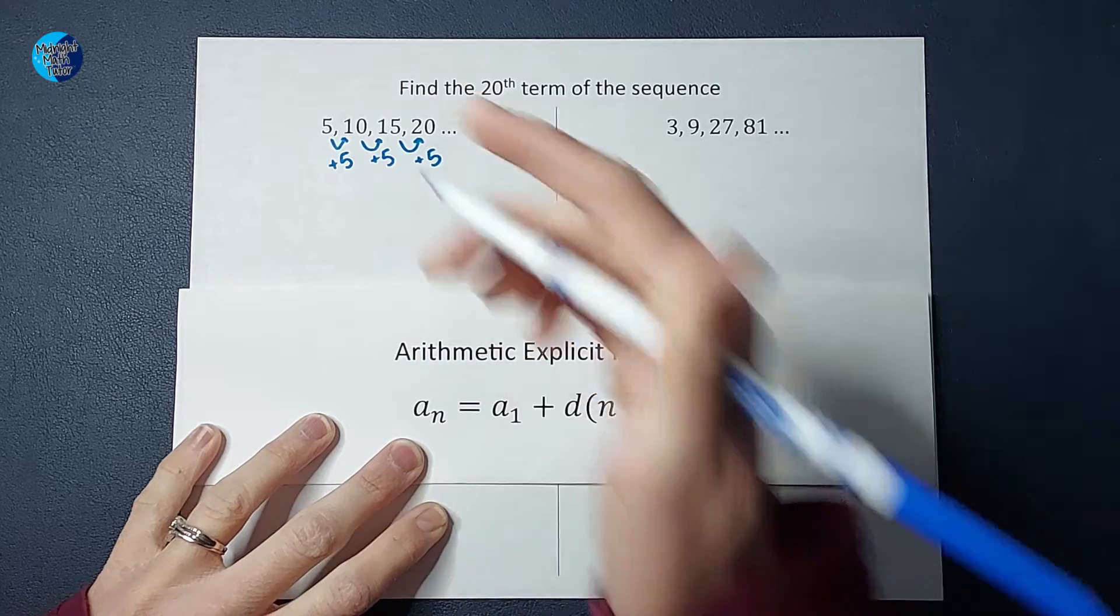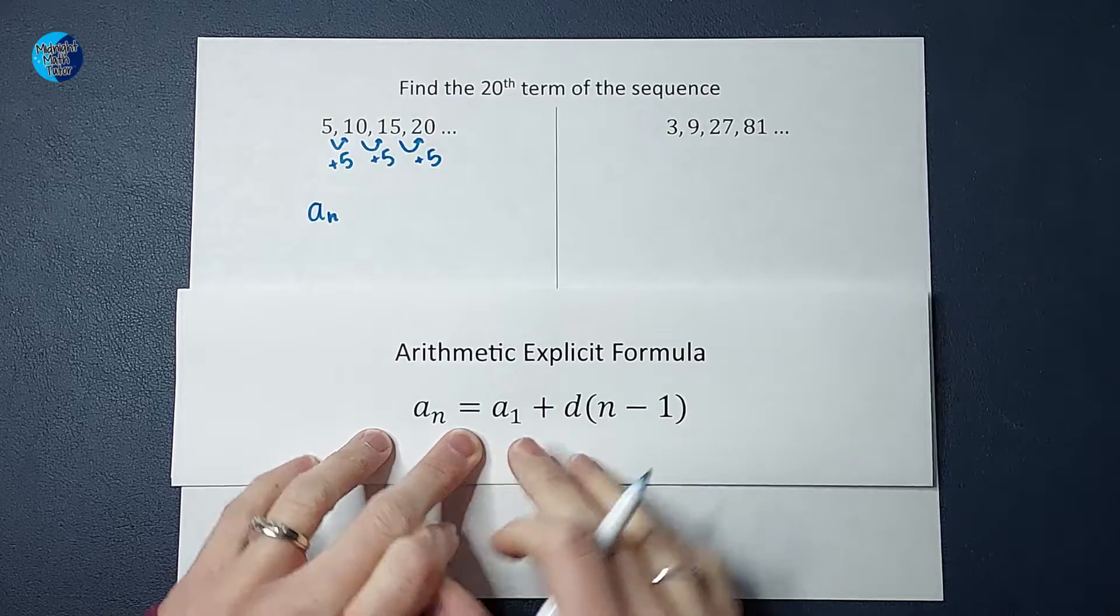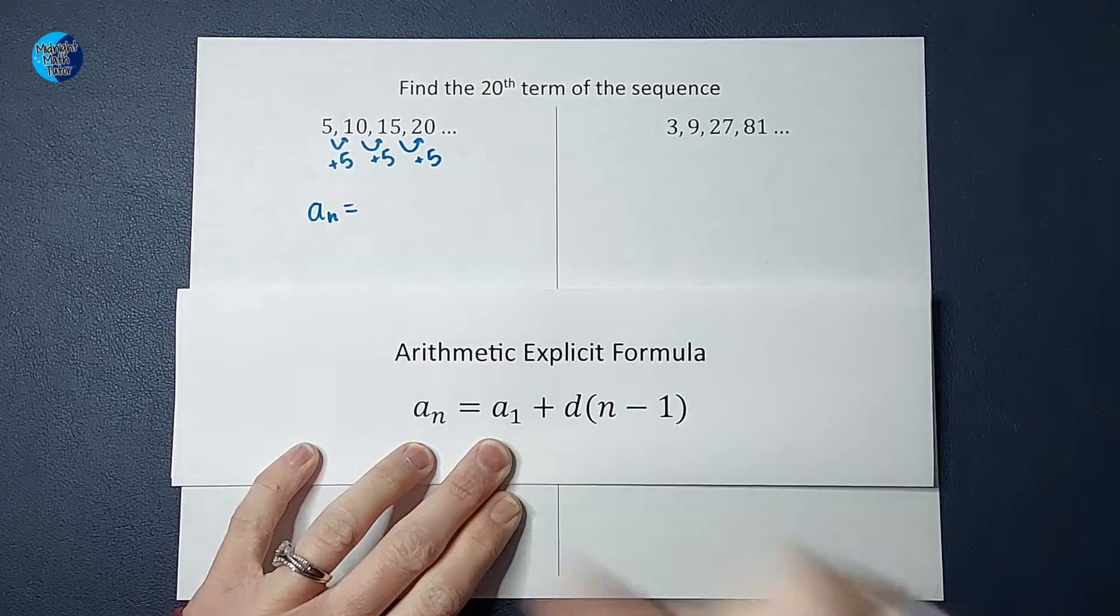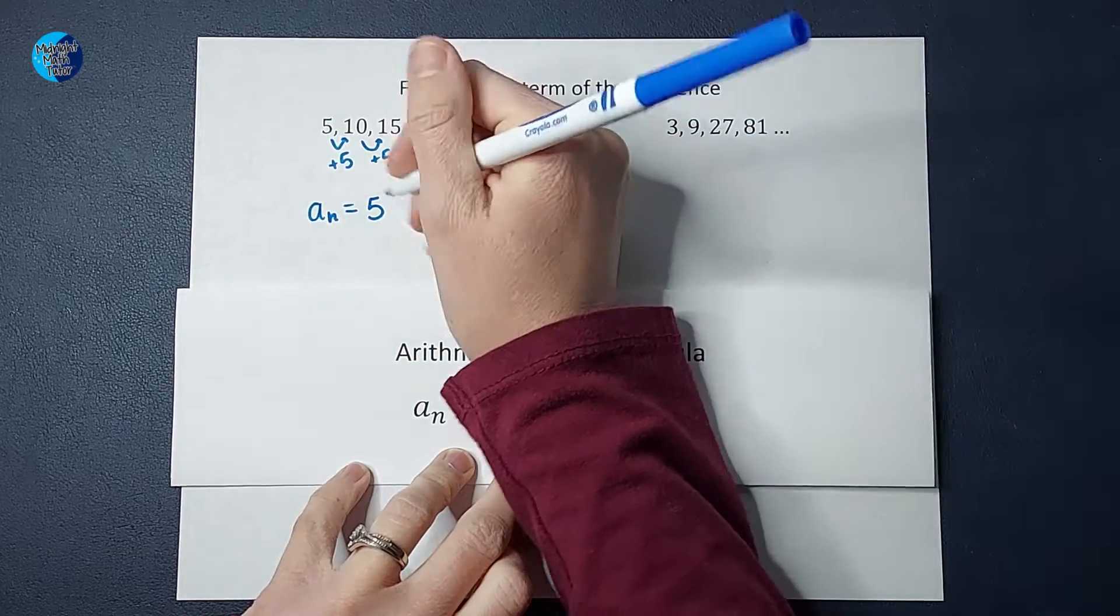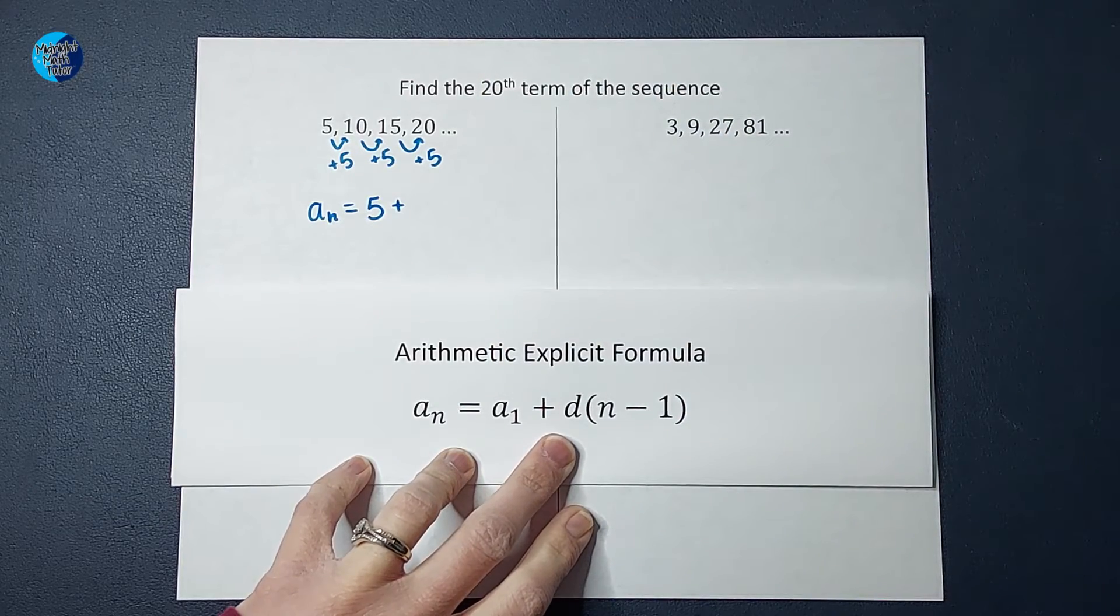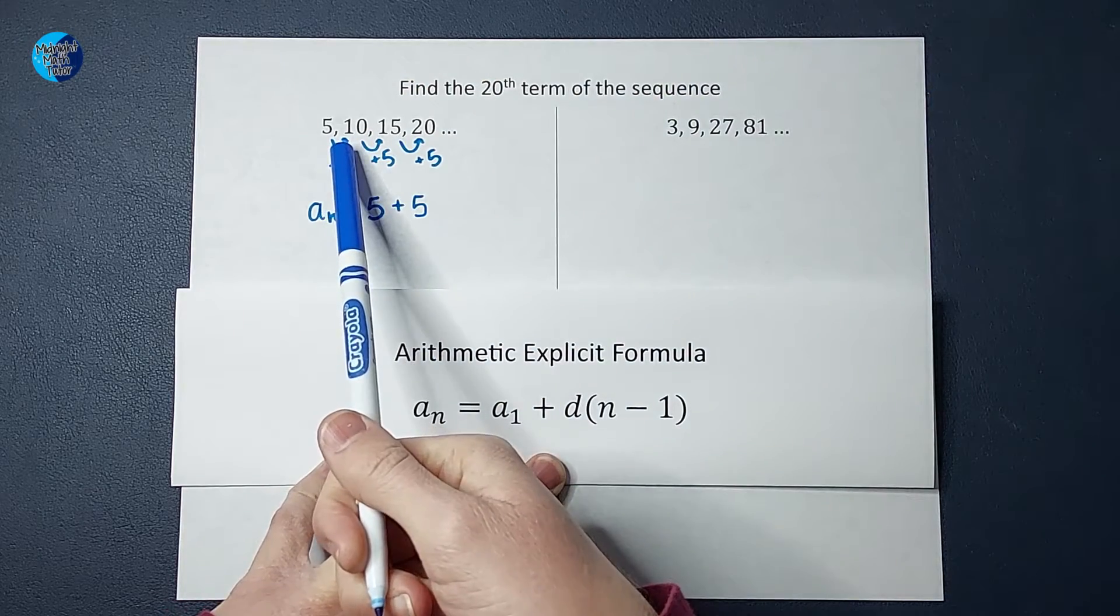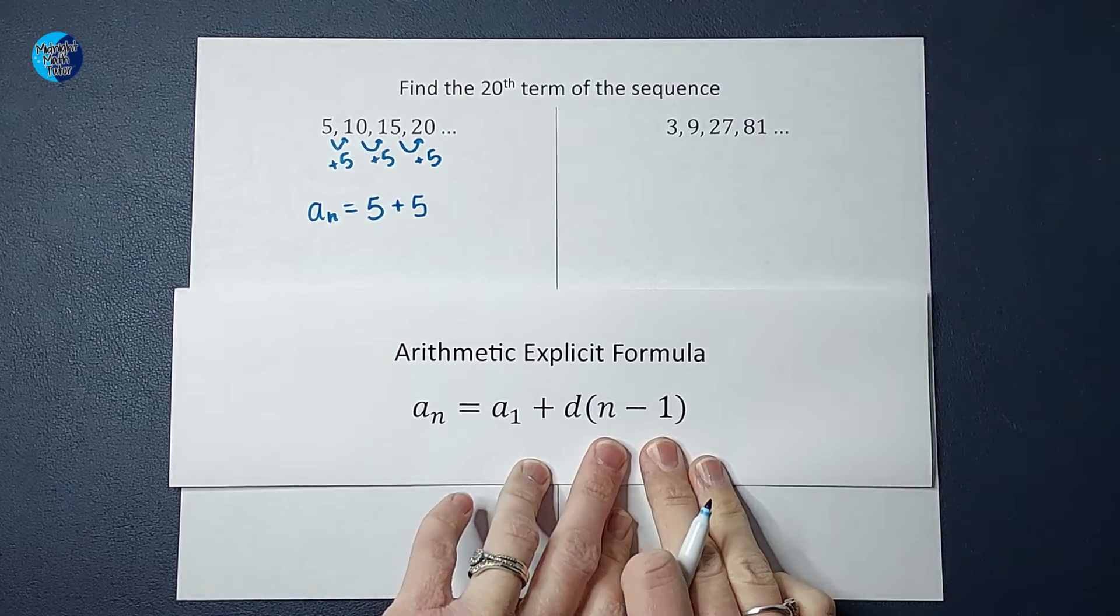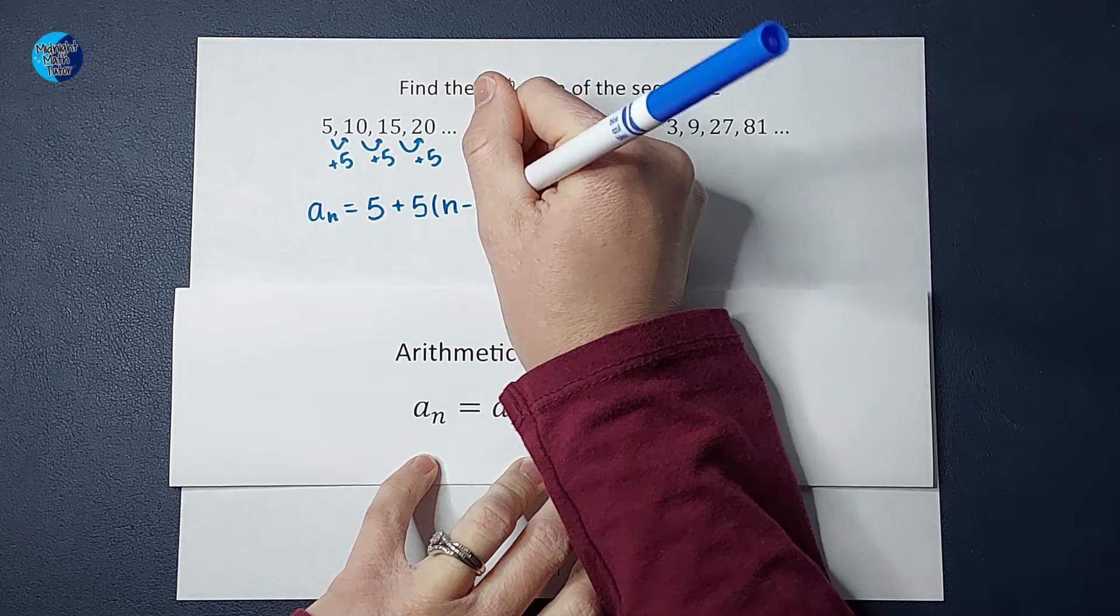So a sub n, which basically stands for whatever number you want to find, plug that in for n, is equal to the first term in my sequence, which in this case is five, plus d, which stands for common difference, or basically what are we doing each time? We're adding five. But not just once, that would give me the next term. But what about the hundredth term or all these other guys? Well, that's where we multiply by the n minus one. Now, why do we multiply by n minus one?